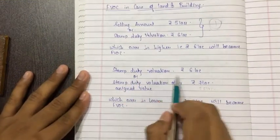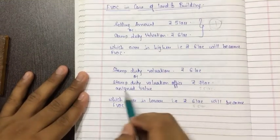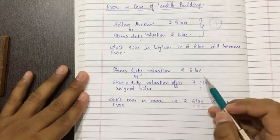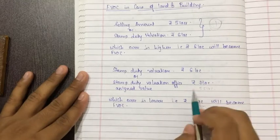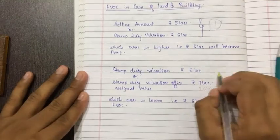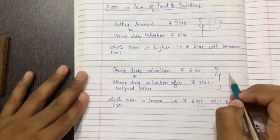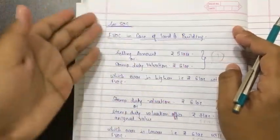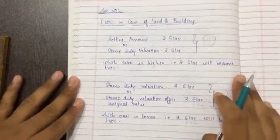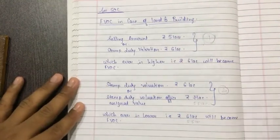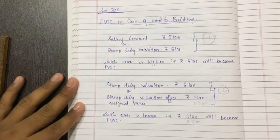So: stamp duty valuation 6 lakh versus valuation officer's assigned value 7 lakh — whichever is lower, 6 lakh, becomes FVOC. Or if the assigned value is 5.5 lakh, then 5.5 lakh becomes FVOC. This is the second step of Section 50C. Write this before the relevant sum. Please copy the entire Section 50C. The next video continues with the remaining sections.